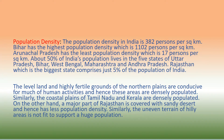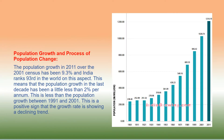Similarly, the coastal plains of Tamil Nadu and Kerala are densely populated. On the other hand, a major part of Rajasthan is covered with sandy desert and hence has less population density. Similarly, the uneven terrain of hilly areas is not fit to support a huge population.